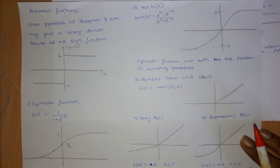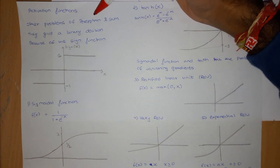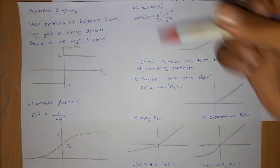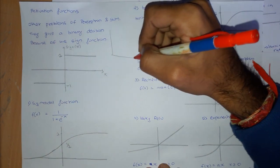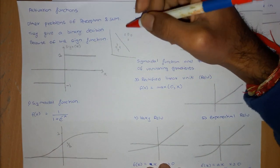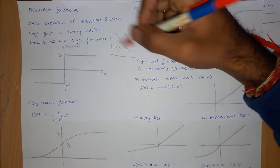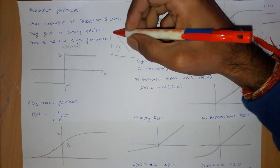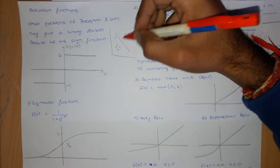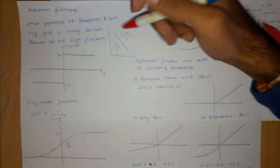In this video we are going to talk about activation functions. There is one more problem with perceptron or with SVM: they give a binary decision. A perceptron or an SVM finds a hyperplane or a line for 2D, and it gives a binary decision — if a sample is on one side it belongs to one class, and if it is on the other side it belongs to the other class.